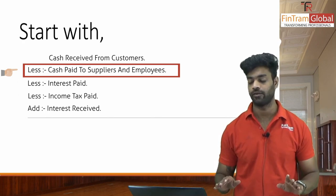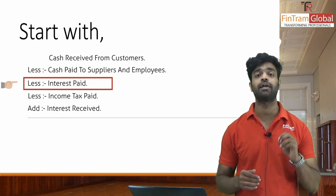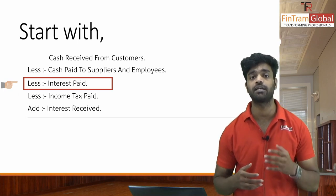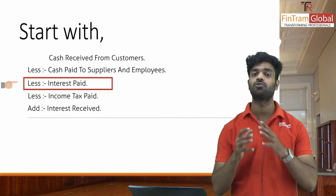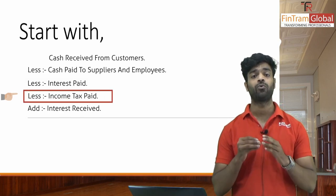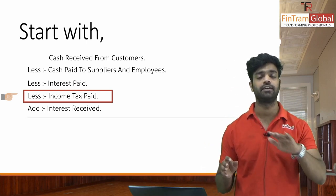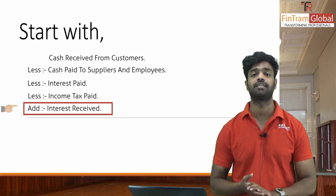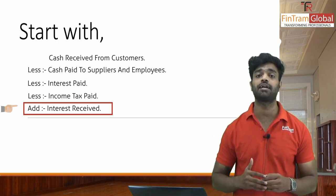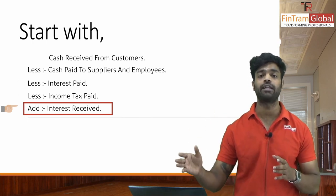The components include: interest paid — for example on loans — which we deduct; then deduct income tax paid; then add interest received, if it relates to a loan or investment. Finally, we arrive at cash flow from operating activities.